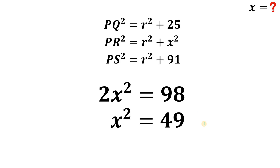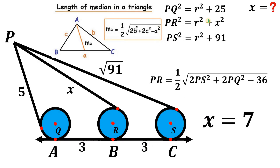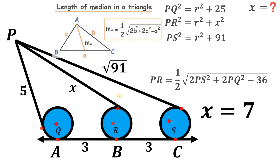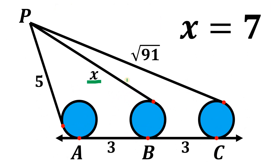Taking the square root of both sides, and since x is a side length we take the positive value: x = 7. Therefore, given this figure and these equations, the exact value of segment x is 7 units.